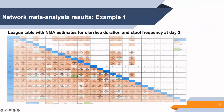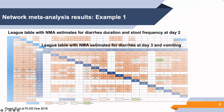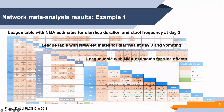In this league table, we can see the results obtained from two outcomes: diarrhea duration and stool frequency at day two. We can see the treatment effects and confidence intervals for all possible pairwise comparisons from this network meta-analysis. However, in this systematic review we assessed five outcomes in total, so different league tables are obtained for each outcome, and all this multitude of results should be summarized in order to inform medical decision-making.